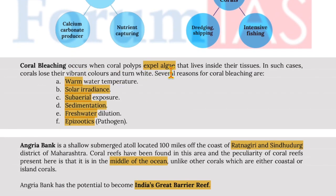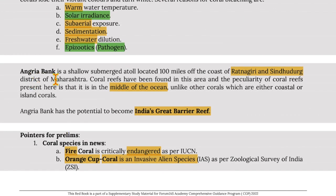Coral bleaching occurs when coral polyps expel the algae living inside their tissue, causing corals to lose their vibrant colours and turn white. Reasons include warm water temperature, solar irradiance, subaerial exposure, sedimentation, freshwater dilution, and epizootics (pathogens) — in case of epizootics, coral bleaching is irreversible. Angriya Bank is a shallow submerged atoll located about 100 miles off the coast of Ratnagiri and Sindhudurg district of Maharashtra, where coral reefs have been found in the middle of the ocean, unlike other coastal or island corals. It has the potential to become India's Great Barrier Reef.